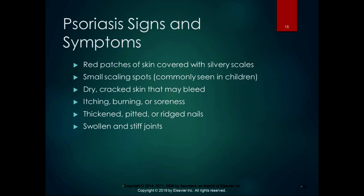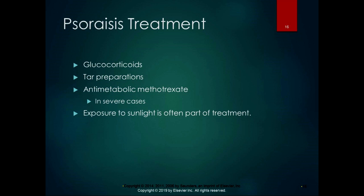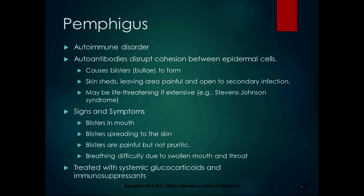Symptoms of psoriasis include red patches of skin covered with silvery scales, small scaling spots in children, dry cracked skin that may bleed, itching, burning or soreness, thick and pitted or ridged nails, and swollen stiff joints leading into psoriatic arthritis. Treatment includes glucocorticoids, tar preparations, anti-metabolic methotrexate in severe cases, and exposure to sunlight. Autoimmune or immunosuppressant treatments are also now being used, and are frequently advertised on television.